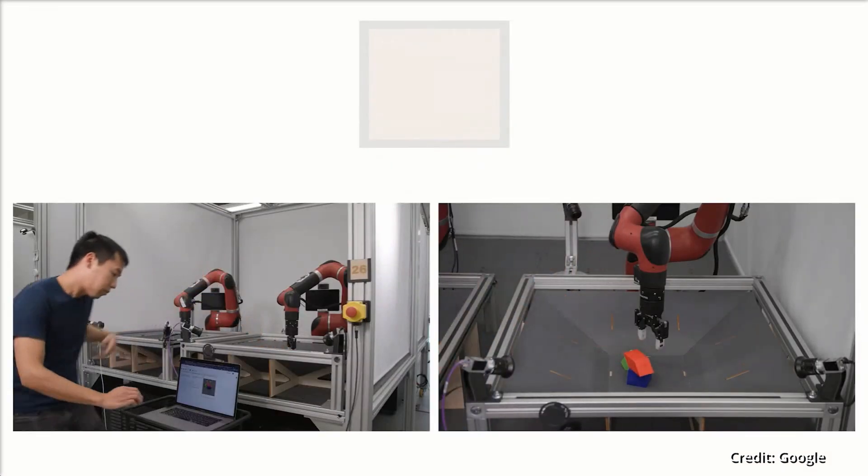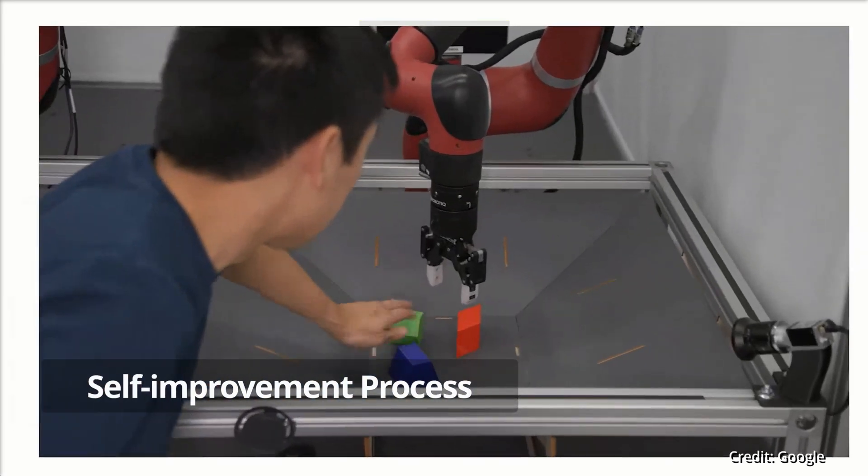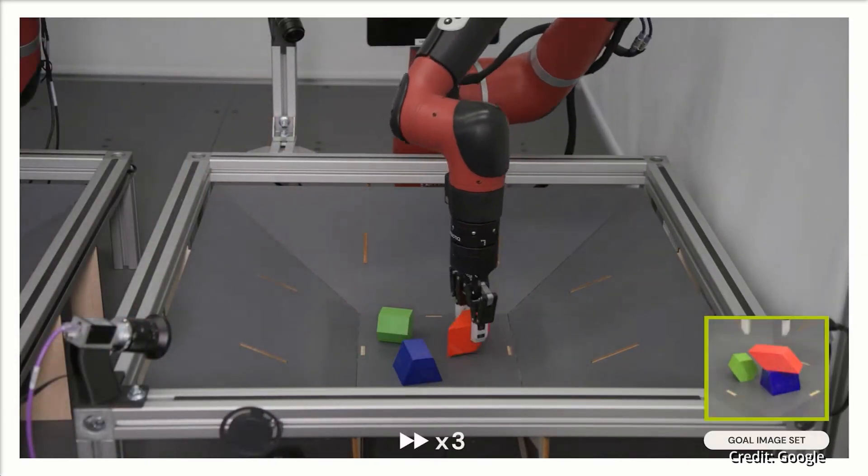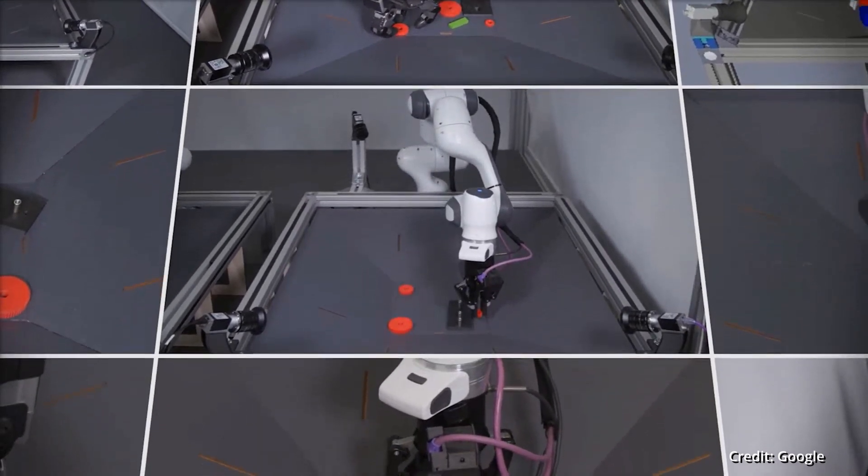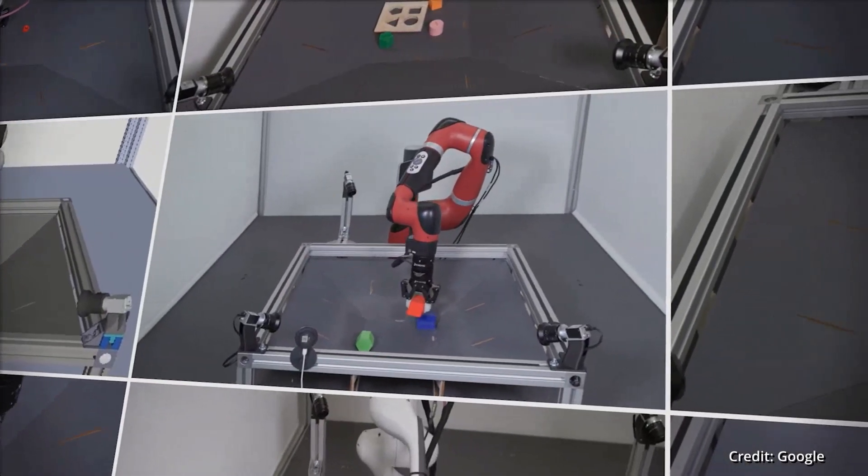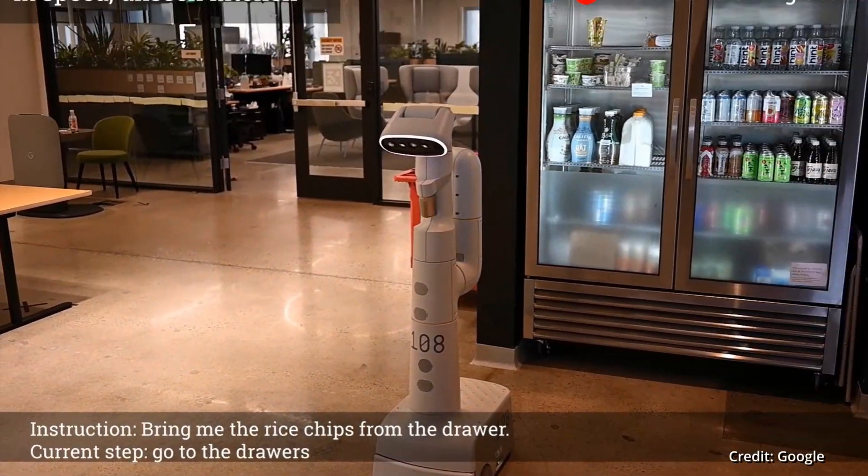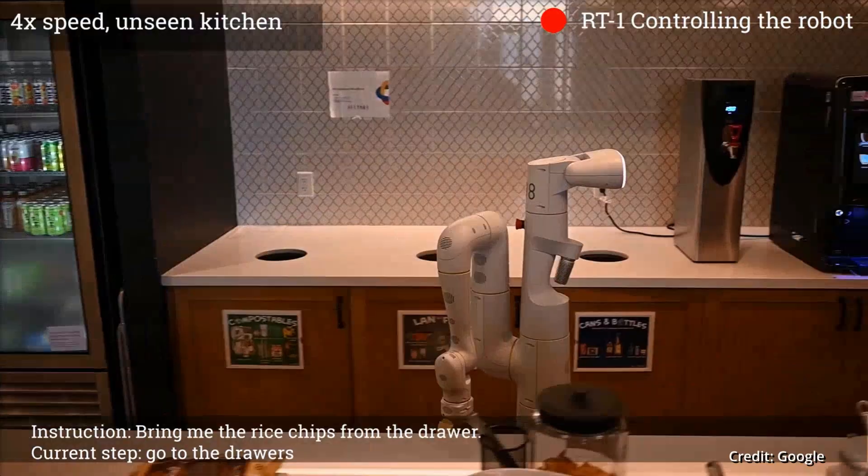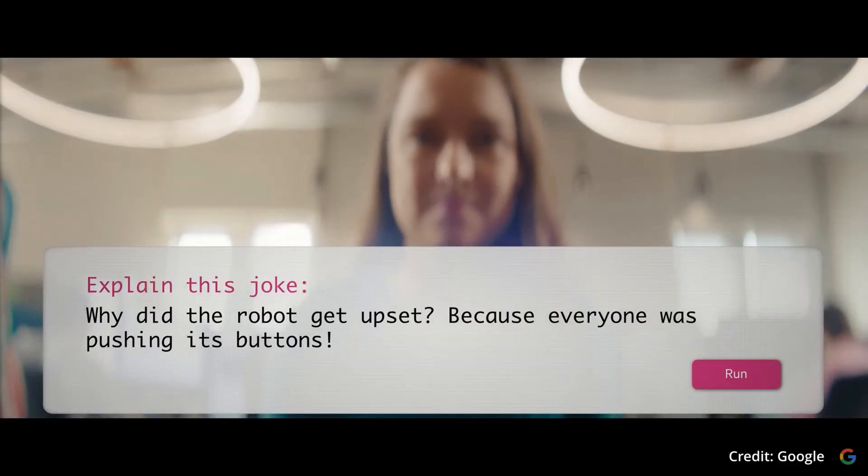Furthermore, a significant feature that sets RoboCat apart from its contemporaries is its self-improvement process. RoboCat starts with an initial round of training using a large dataset of images and actions from various robot arms performing hundreds of different tasks. Once this first round of training is completed, RoboCat embarks on a self-improvement training cycle. And here's where RoboCat shows its distinctive flair.